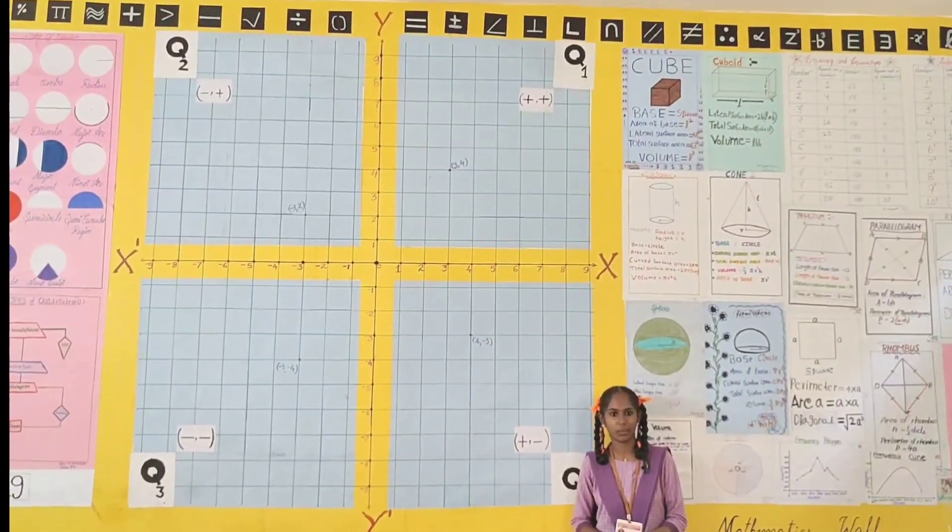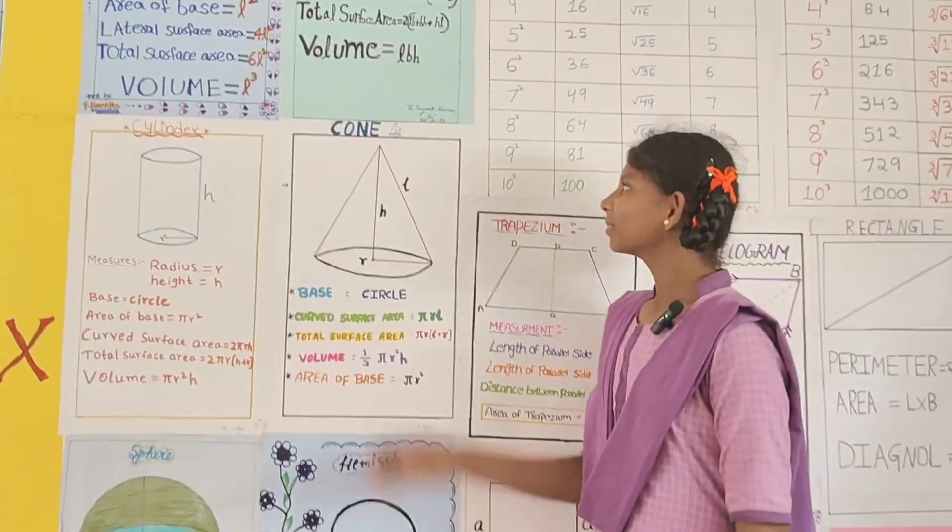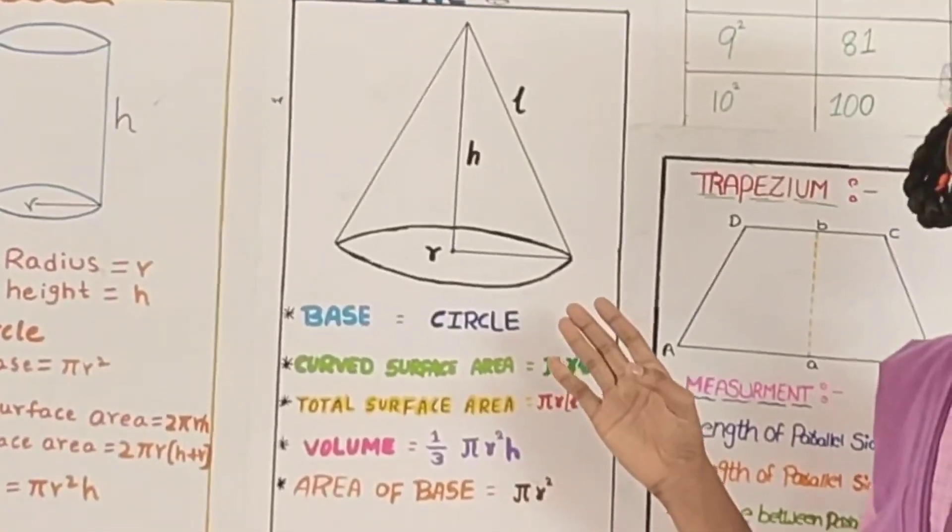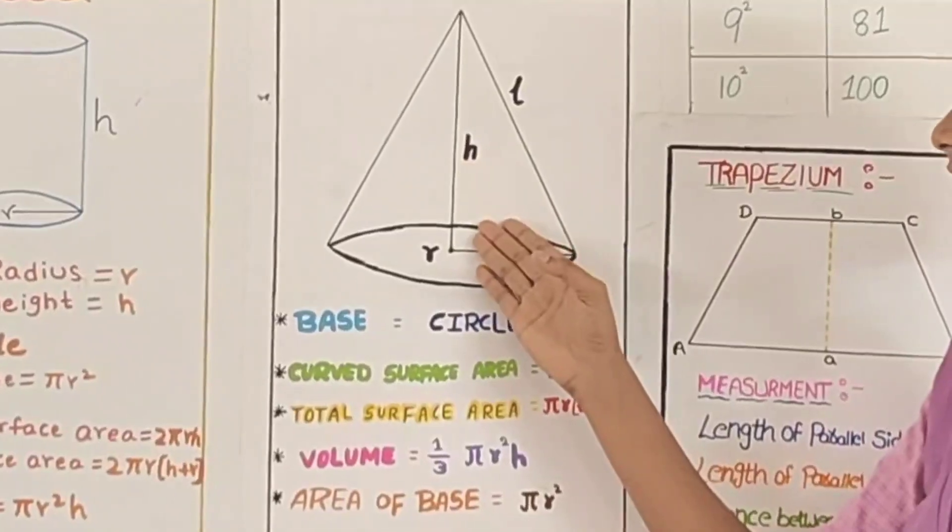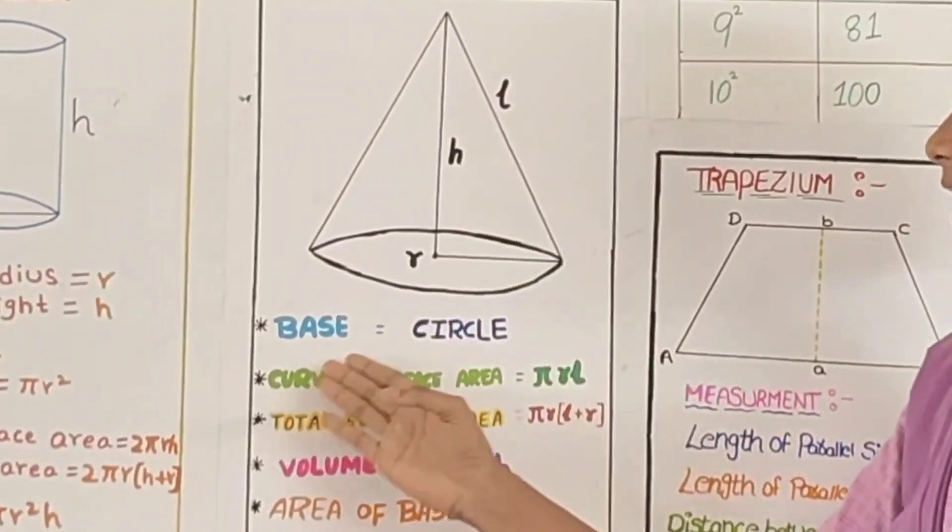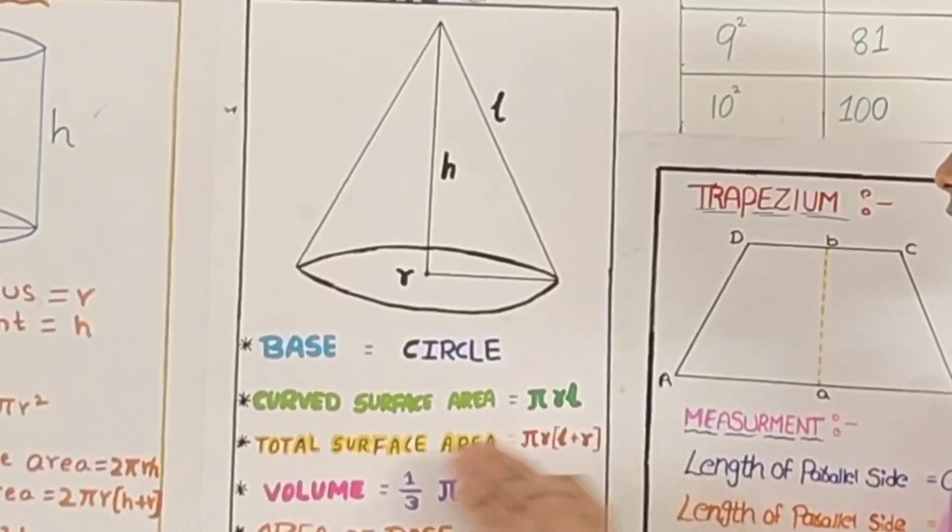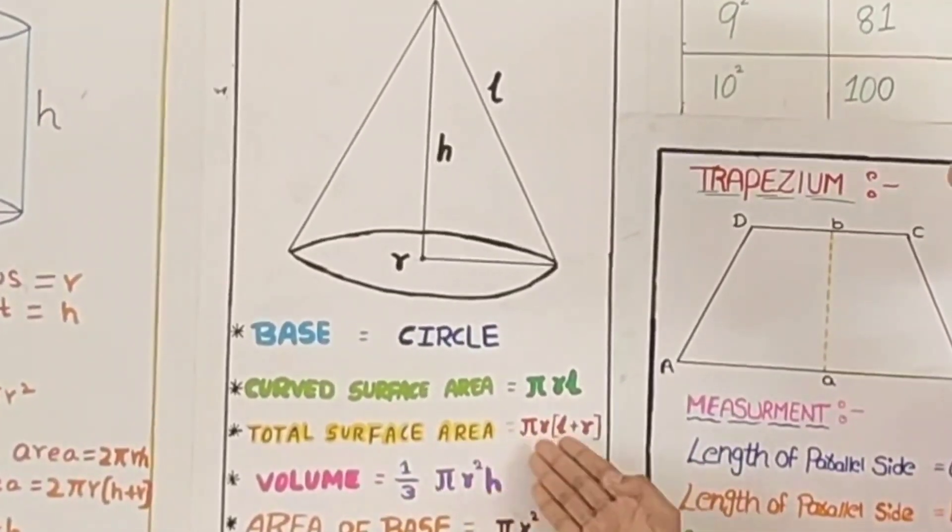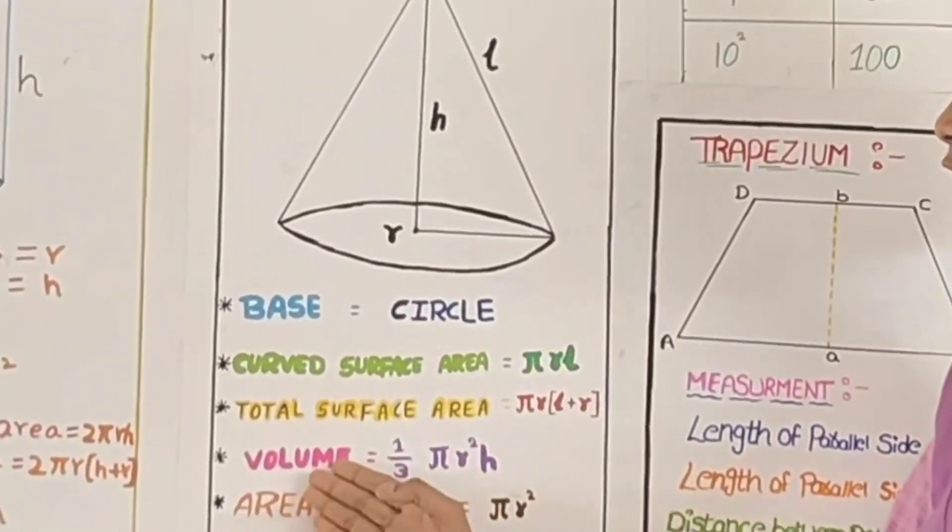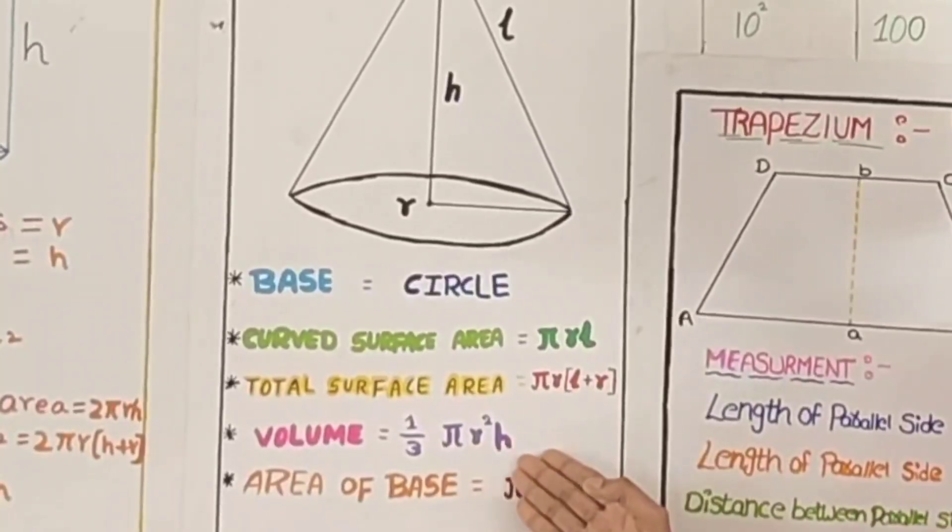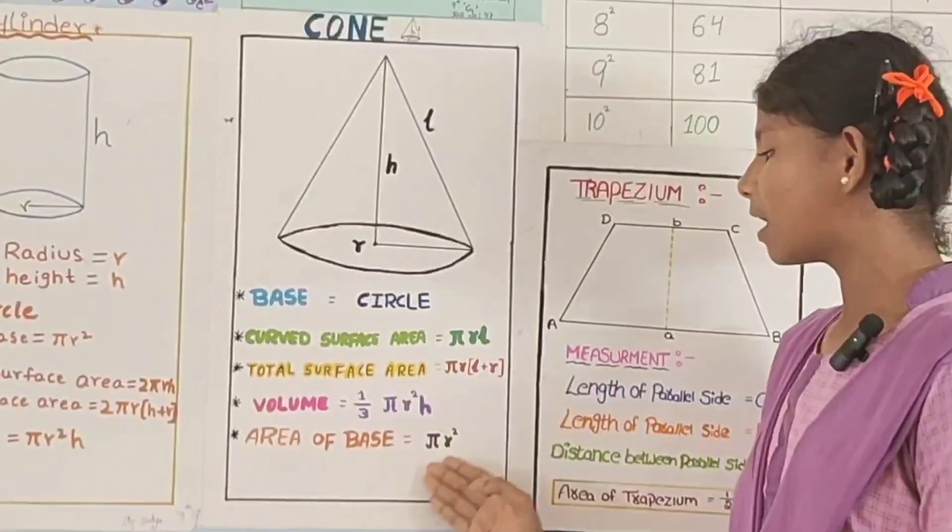The coordinate geometry is Rene Descartes. This is cone. Cone is a three-dimensional diagram. Radius is R, H is height, slant height is L. Base of cone is circle. Curved surface area of cone is pi RL. Total surface area of cone is pi R into L plus R. Volume of cone is 1 by 3 pi R square H. Area of base is pi R square.